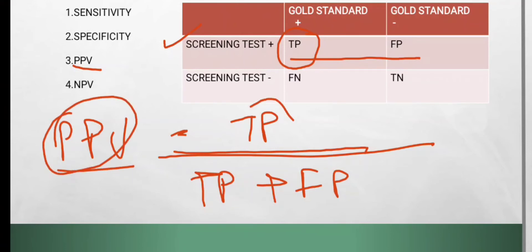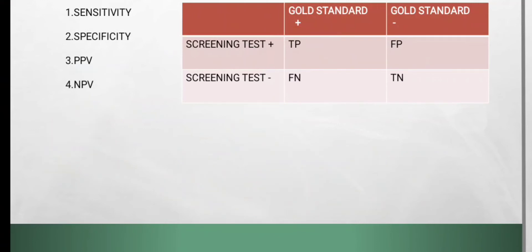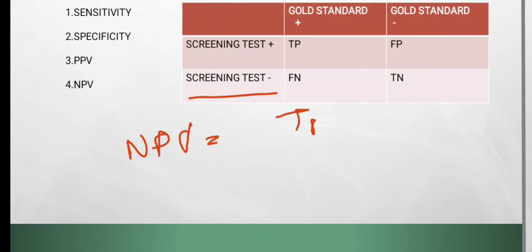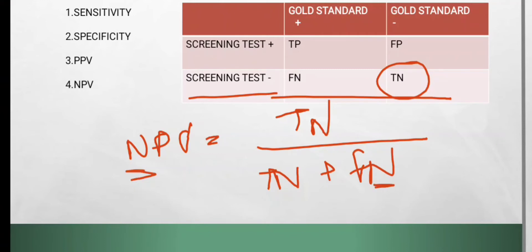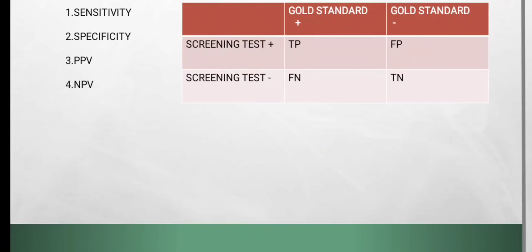Negative predictive value is the ability of the screening test to correctly identify all those who didn't have the disease out of those who tested negative on the screening test. Negative predictive value equals true negative divided by true negative plus false negative. A quick mnemonic: all the N's stay together.